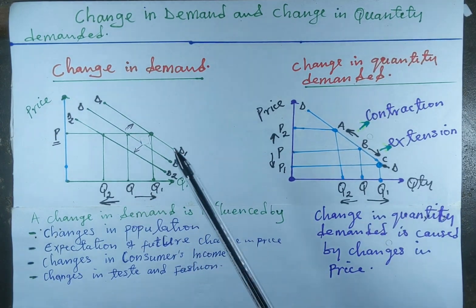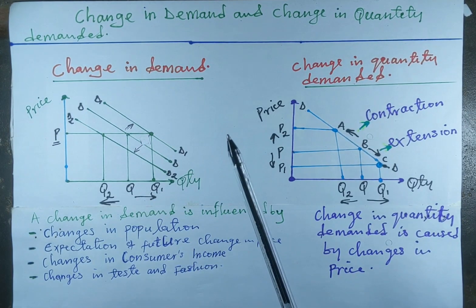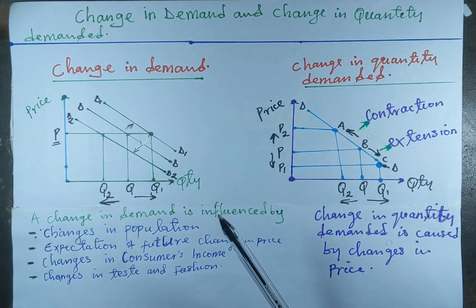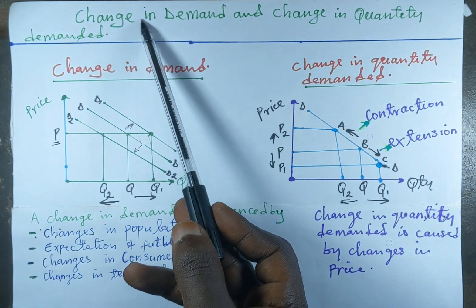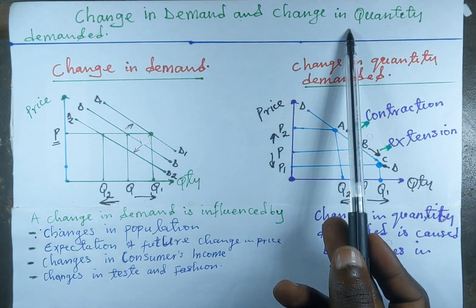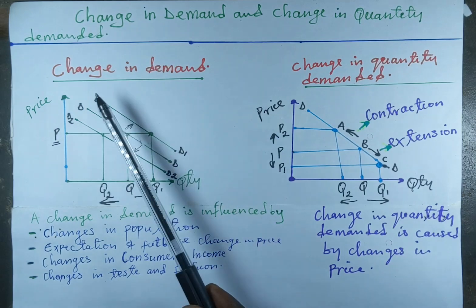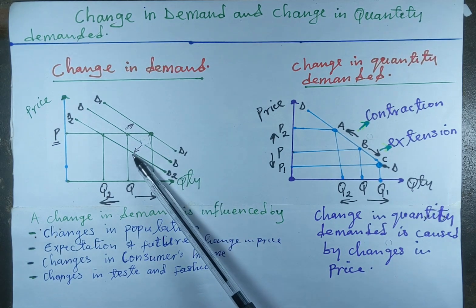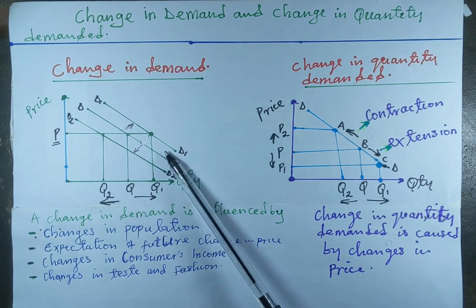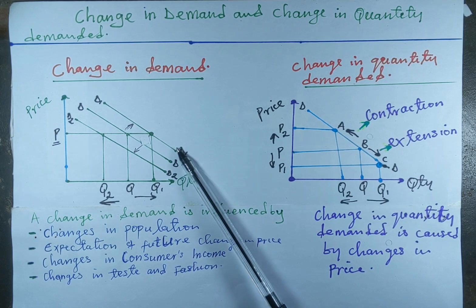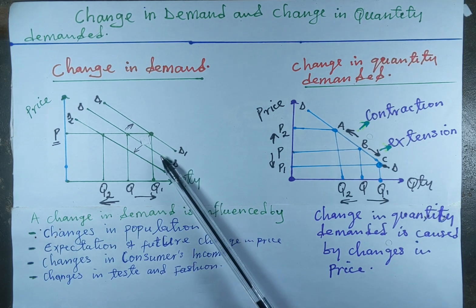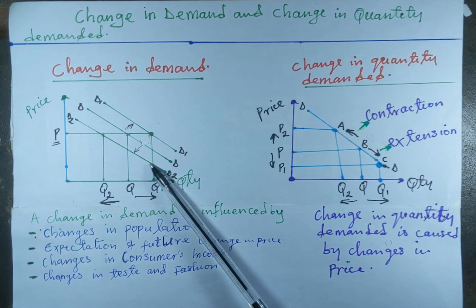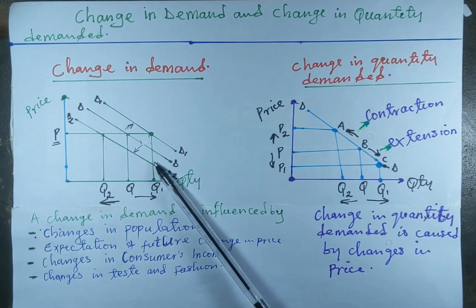Welcome to another session of Sam's Economist Tutorials. In today's video we are going to be explaining a change in demand and a change in quantity demanded. A change in demand is the complete shift of the demand curve either to the right or to the left. Movement of the demand curve to the right shows an increase in demand, while movement to the left shows a decrease in demand.